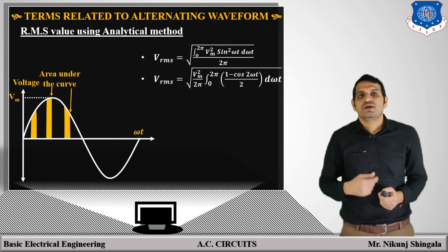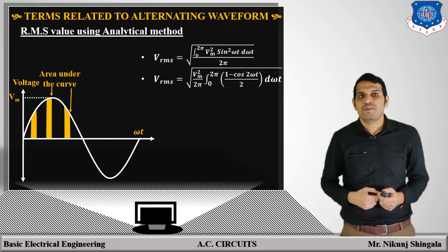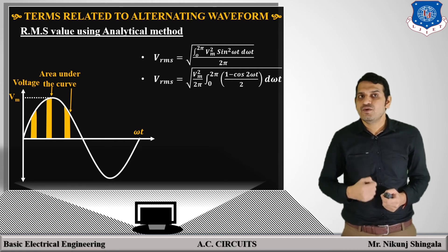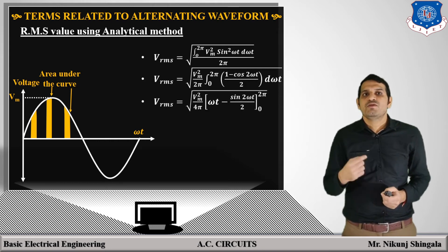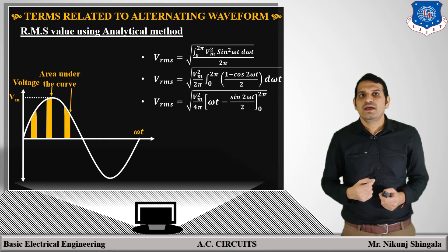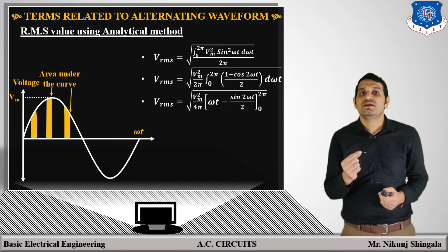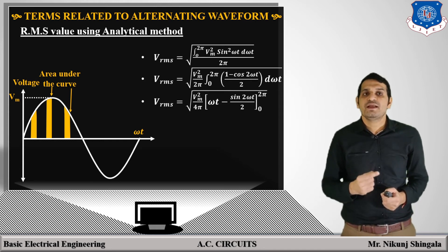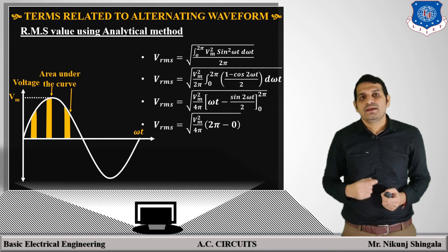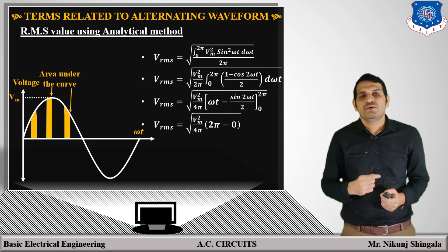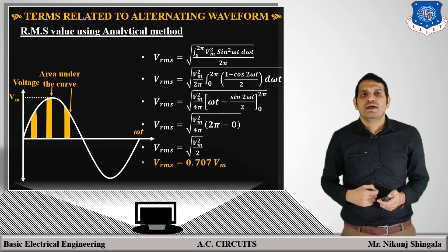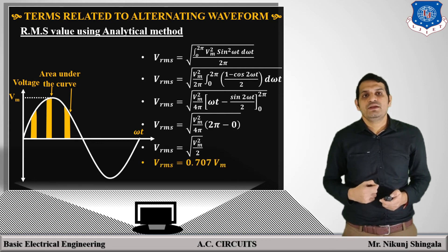So V_RMS = √[(Vm²/2π) × integration from 0 to 2π of sin²(ωt) d(ωt)]. Replacing sin²(ωt) with (1 − cos 2ωt)/2 and integrating: the integration of 1 is ωt and integration of cos(2ωt) is sin(2ωt)/2. So V_RMS = √[(Vm²/4π) × [ωt − sin(2ωt)/2] from 0 to 2π]. Putting in the limits gives 2π − 0, and solving gives V_RMS = √(Vm²/2) = 0.707 × Vm, where Vm is the maximum value of the given signal.